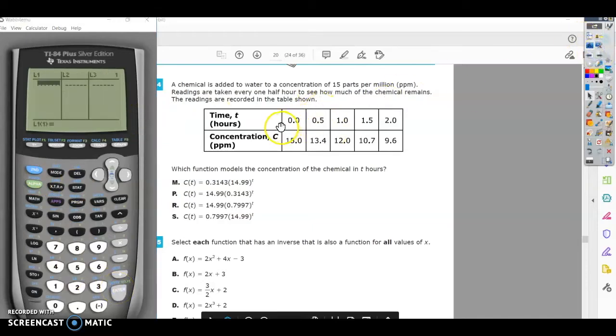My x's or my t's in this case would be in the first column. So I'm going to enter: zero, 0.5, 1, 1.5, and 2.